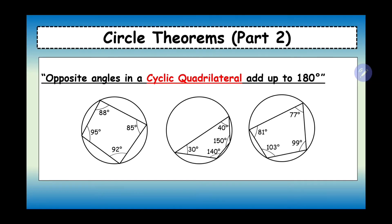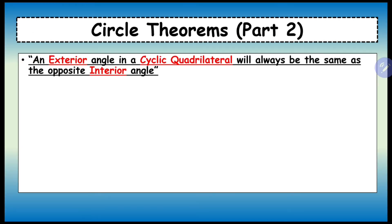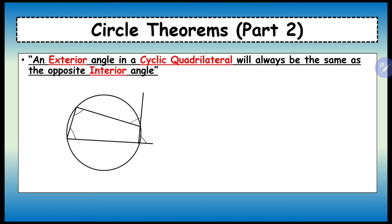So this is another part of the rule: an exterior angle in a cyclic quadrilateral will always be the same as the opposite interior angle. Here's a cyclic quadrilateral, and this line that's been extended out is an exterior angle. So if that angle is 73, then the opposite interior angle is also going to be 73.